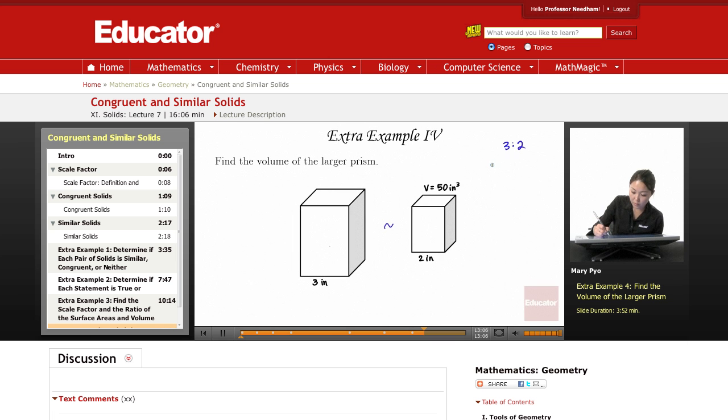So to find the ratio, the ratio of the volume, it's three cubed to two cubed. That's 27 to eight, the ratio of the volume. This is the larger one over the smaller one.